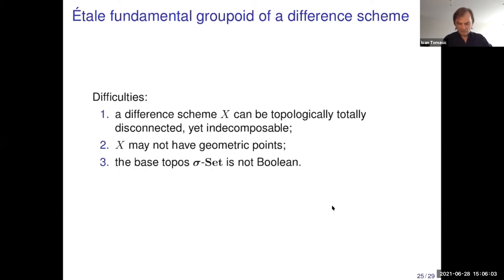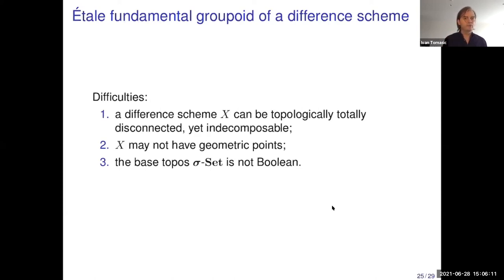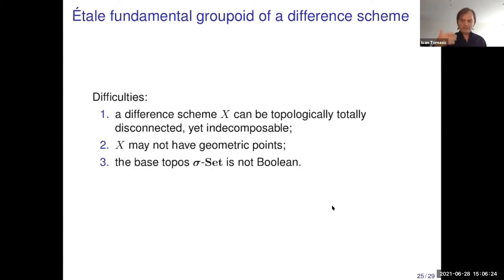This immediately tells us that we cannot go along that route, but have to look to more general topos-theoretic Galois theories. We should anticipate getting a kind of locality group point as an object rather than a group.